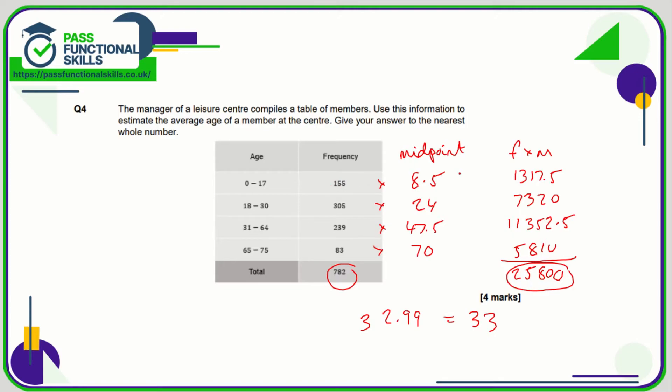So the total ages of these 155 people is 155 times their age, which we're assuming is eight and a half. That's where this figure here comes from. So these numbers here are the totals. That is the total estimated age of the 155 people in this age category, the 305 in this age category, etc.